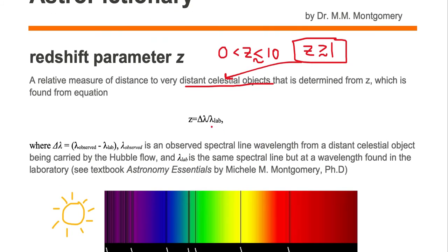We determine z from this equation delta lambda divided by lambda lab, where delta lambda is lambda observed minus lambda lab, and lambda observed is the observed spectral line wavelength from a distant celestial object being carried by the Hubble flow.